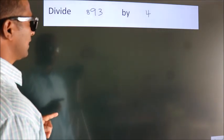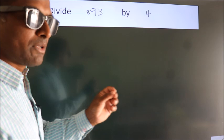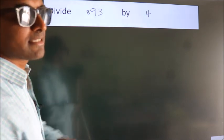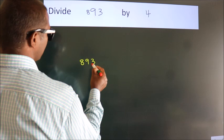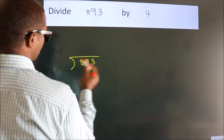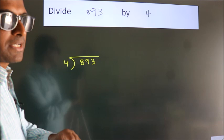Divide 893 by 4. To do this division, we should frame it in this way: 893 here, 4 here. This is your step 1.